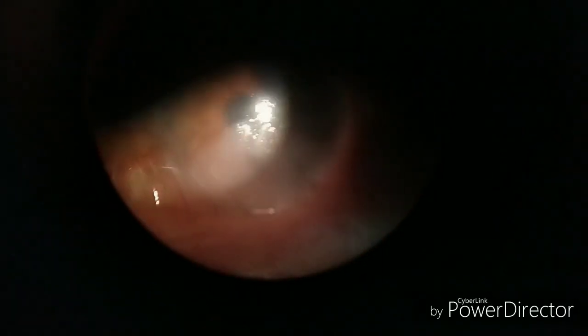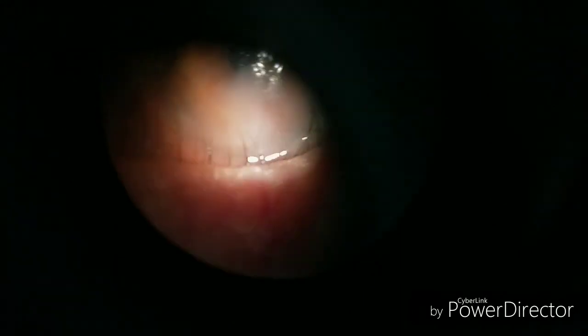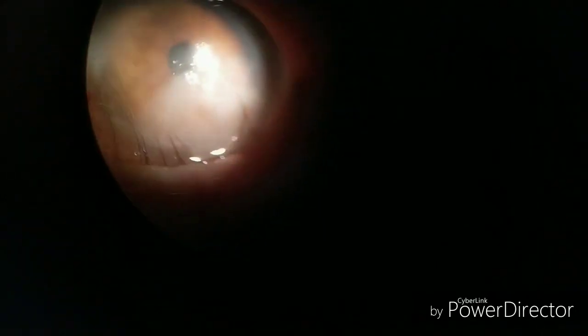You can see on examination the lower eyelid of the left eye is turned inward and lashes are touching the cornea. You can see the inferior half of the cornea is hazy because of the constant rubbing of these lashes.